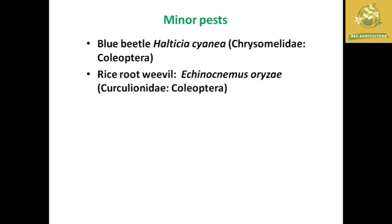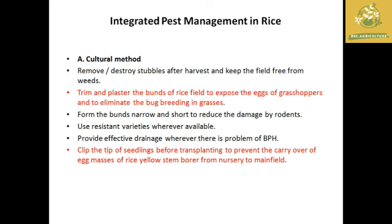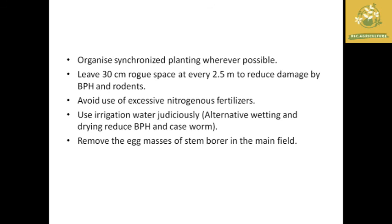Other minor pests include blue beetle and rice root weevil. Root feeders found in rice are rice root weevil, rice root cup, and harvester termites. Integrated pest management in rice — cultural methods: trimming and blasting of bunds to expose eggs of harvesters and eliminate bug breeding in grasses; clip the tip of seedlings before transplanting to prevent carrying of egg masses of rice yellow stem borer from nursery to main field; maintain a rogue spacing of 30 cm at 2.5 meters to reduce BPH and rodent damage; avoid excessive fertilizer use.